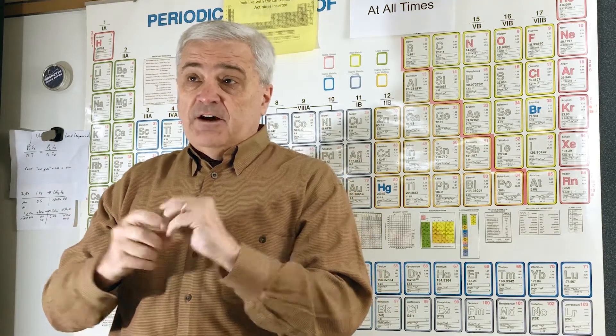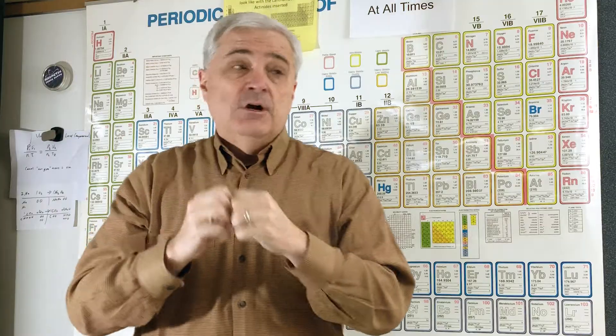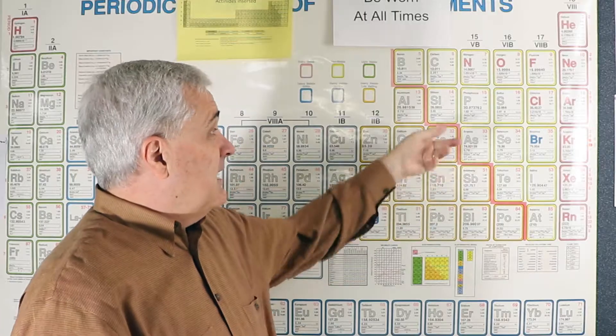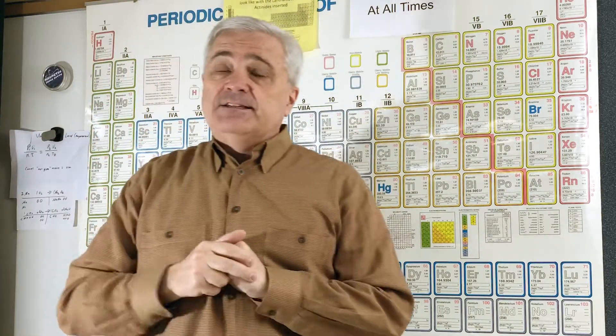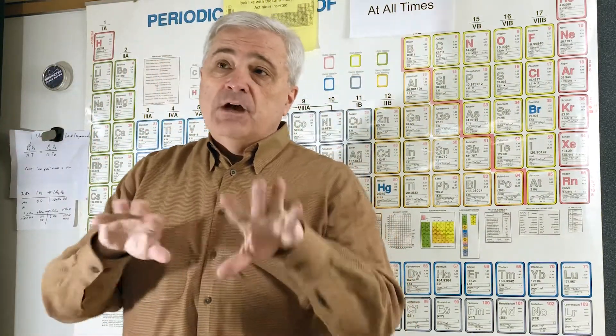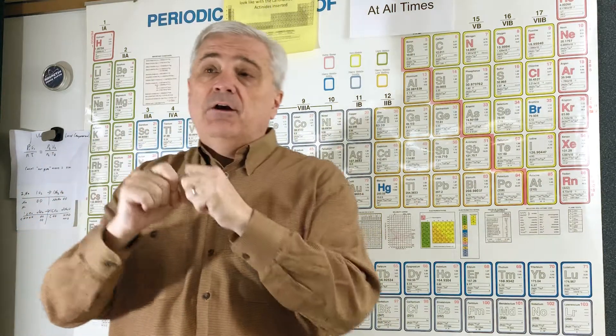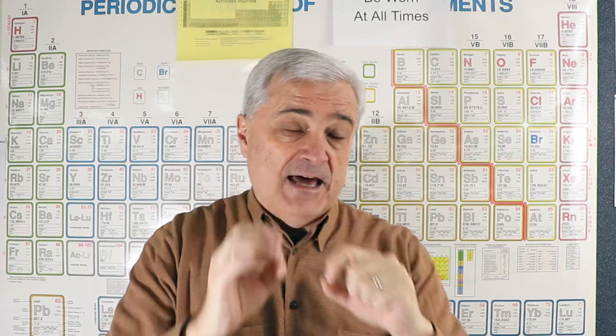Diatomic — di means 2. These are the elements that are found in pairs. You can have one aluminum atom, and he's fine with that. But there are seven elements that do not want to be by themselves. These seven guys will always pair up with themselves, and thus they are diatomic — there are two atoms.